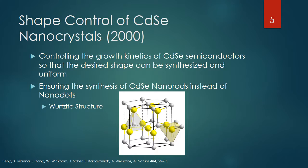They were mainly trying to synthesize cadmium selenide nanorods. Cadmium selenide particles tend to take one of two shapes — nanorods or nanodots — and these shapes are based on the wurtzite structure shown below.